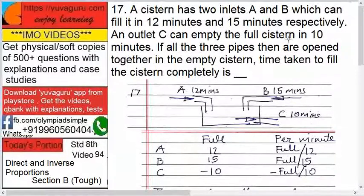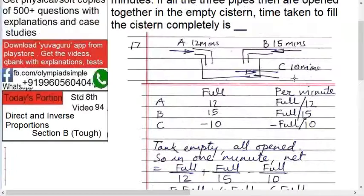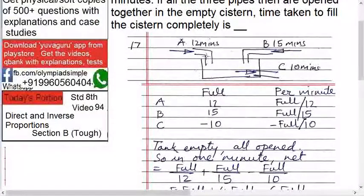Per minute. Now what happens next? Tank is empty and all are opened. All taps are opened. So in one minute, net is what? This tank is empty, everything is open now. What will happen?